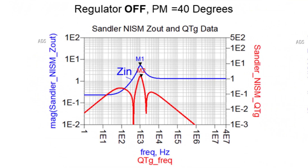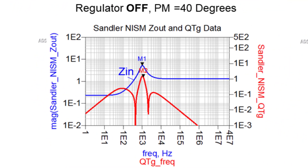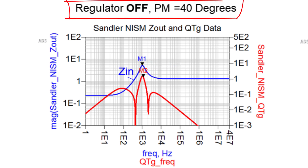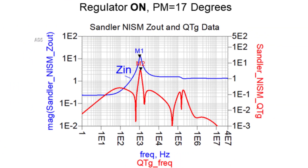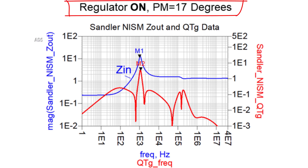The plot on the left shows an input filter design on the LM20143 regulator that has high impedance at one kilohertz and 40 degrees of stability. However, turning the regulator on with this input filter shows how the active negative input resistance of the regulator reduces the stability down to 17 degrees.